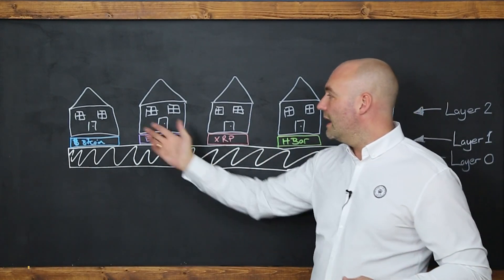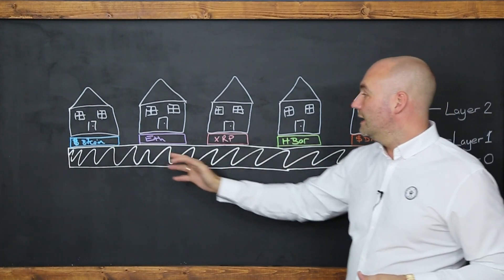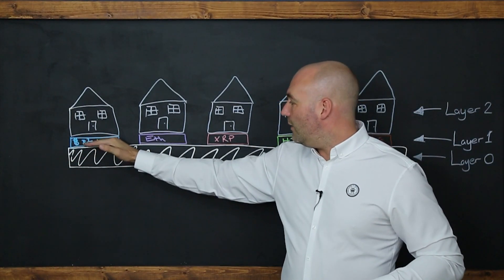Try and imagine them like properties, for example, on a new build housing estate. So you've got Bitcoin, there's their foundation, and that's layer one.